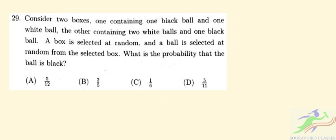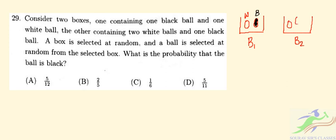Question number 29: consider two boxes. Box B1 contains one black ball and one white ball. Box B2 contains two white balls and one black ball. A box is selected at random and a ball is selected at random from the selected box. What is the probability that the ball is black?